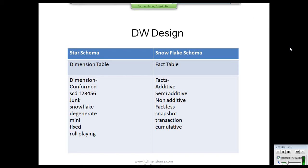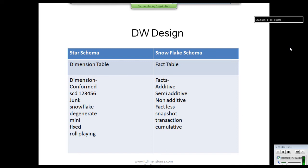When we look at the different types and categories of fact and dimension tables, there are many classifications. A data modeler uses these according to the requirement only — there is no standard that all table types must be used. According to the requirement, the modeler selects which dimension category or dimension table to use.